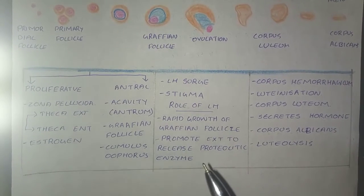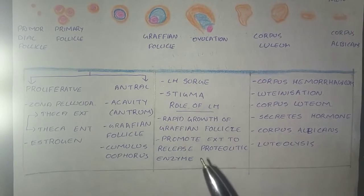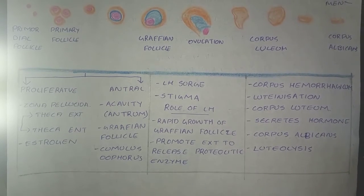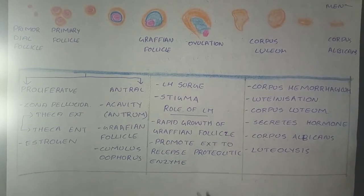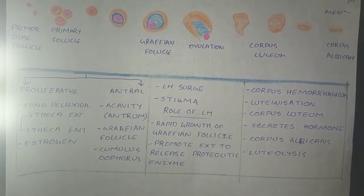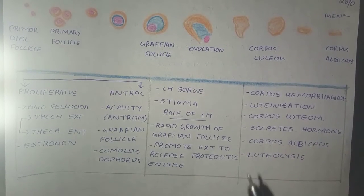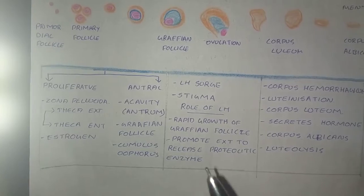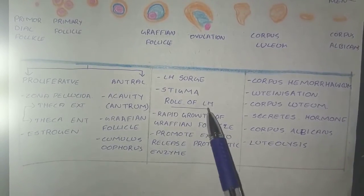This follicular fluid escapes into stigma because it is thin and avascular, and finally stigma ruptures and releases the secondary oocyte into the abdominal cavity.